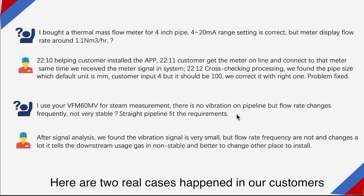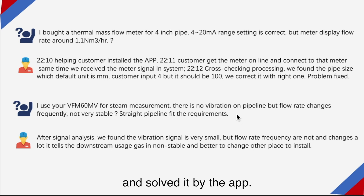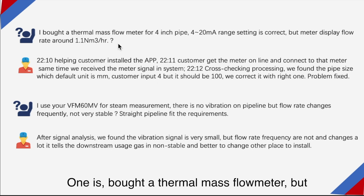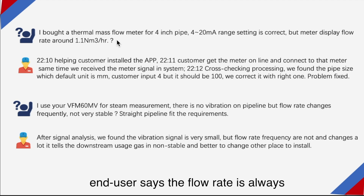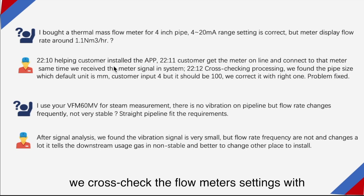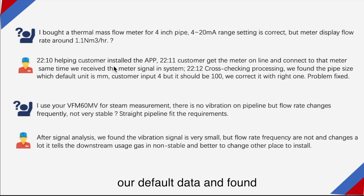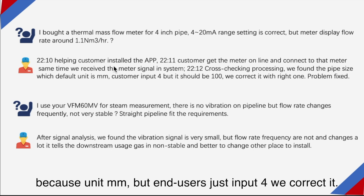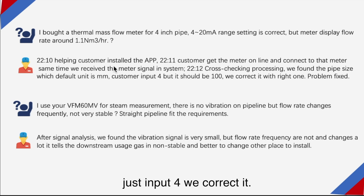To help users find the real cause of problems and solve them in a time-saving and efficient way, here are two real cases from our customers solved using the app. One is about a mass flow meter where the end user reported the flow rate was always in a very small range. After getting the meter online, we cross-checked the flow meter settings with our default data and found the pipe size should be 100 because the unit is millimeters, but the end user had input 4.